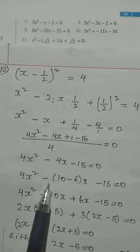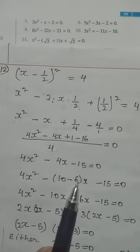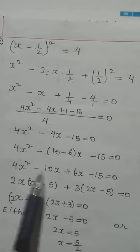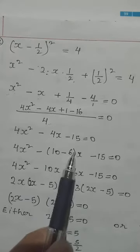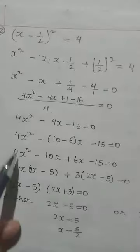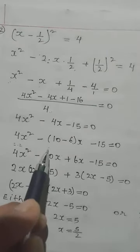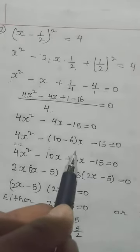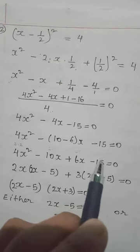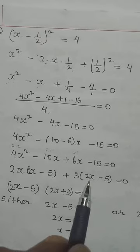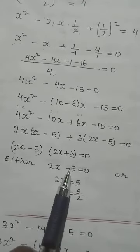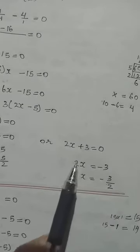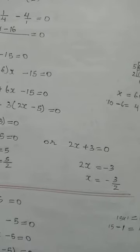In the middle term, replace minus 4x with minus 10x plus 6x. So: 4x squared minus 10x plus 6x minus 15. Take 2x common from the first two terms — 2x(2x minus 5). Take 3 common from the last two terms — 3(2x minus 5). Both groups share (2x minus 5), so: (2x minus 5)(2x plus 3) equals 0. Setting each factor to zero: 2x minus 5 equals 0 gives x equals 5 by 2; 2x plus 3 equals 0 gives x equals minus 3 by 2.